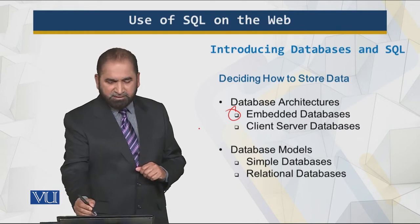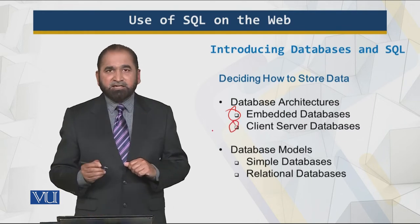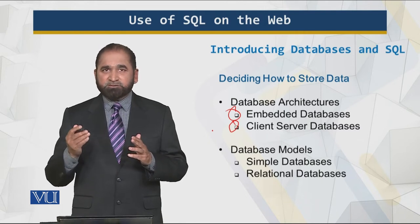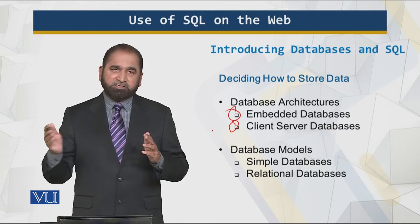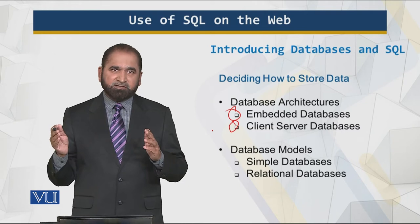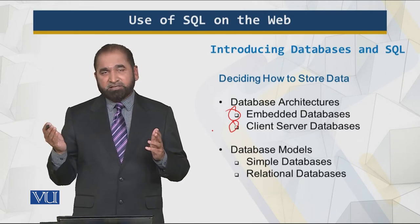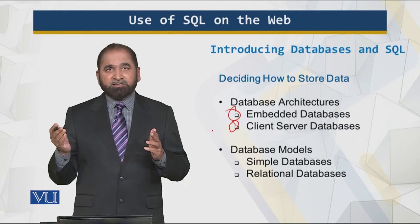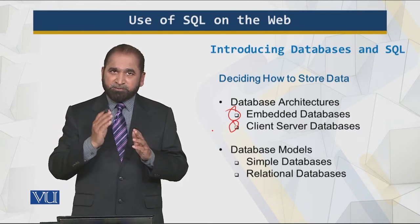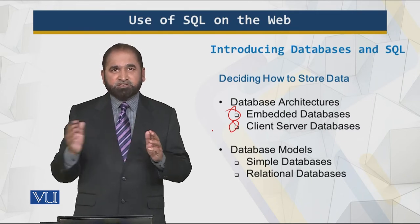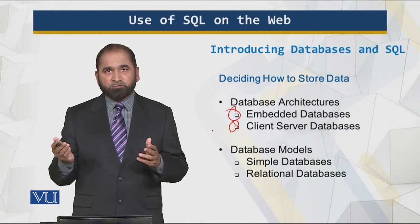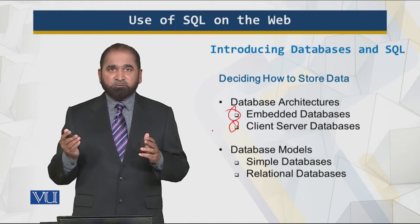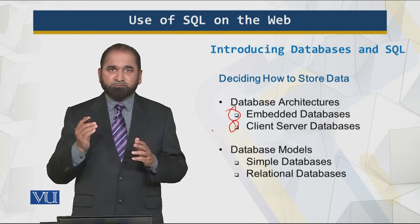Then there is the client-server model. In the client-server model, it is obviously a multi-user model where communication takes place over the network — it could be the internet also. By virtue of separating the client from the server, it adds flexibility to this model. This model is flexible, but of course there will be a communication cost and degradation in performance.